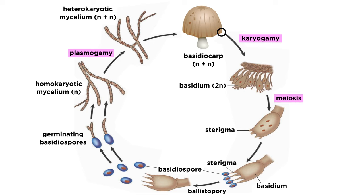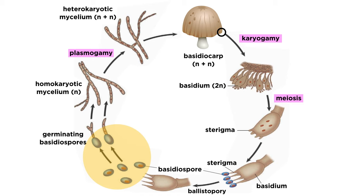That diploid nucleus then undergoes meiosis, forming four haploid nuclei. These nuclei are transported to the edge of basidia in structures called basidiospores. These spores are then discharged by the fusion of the Buller's drop and the adaxial drop through the process called ballistopory. The spores are dispersed into the environment, and the cycle repeats again.